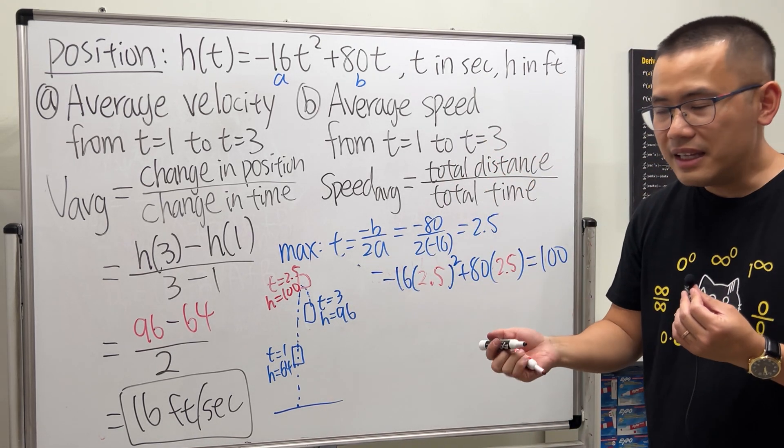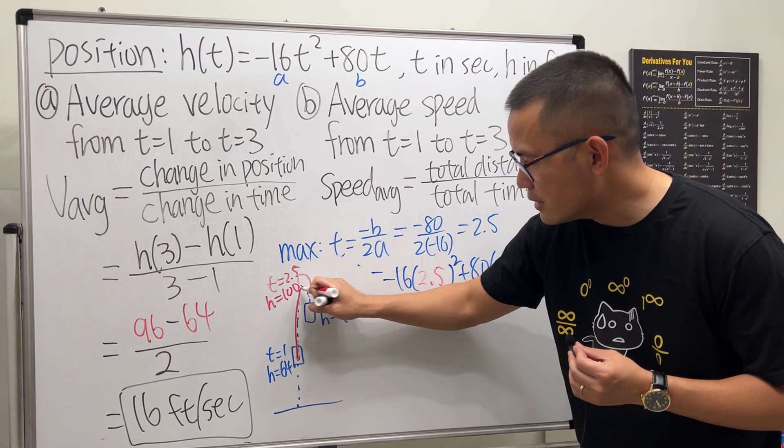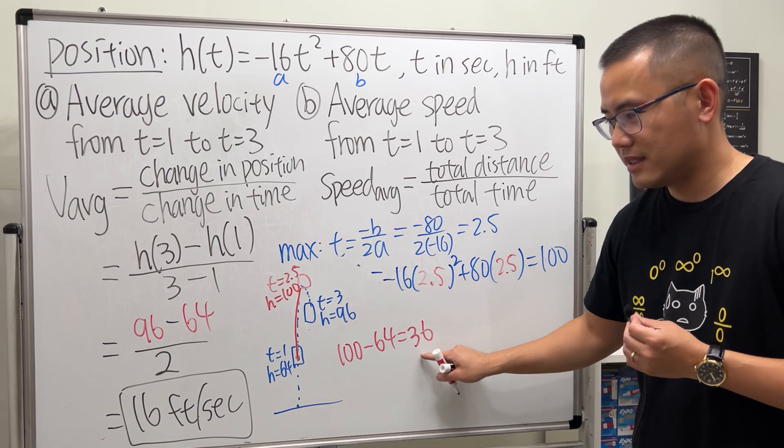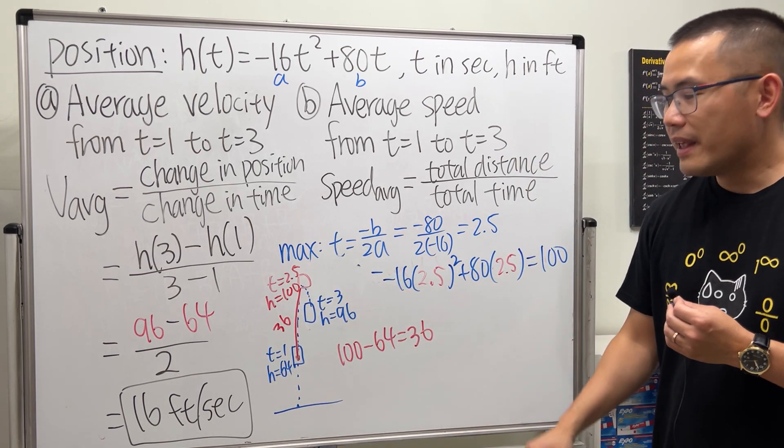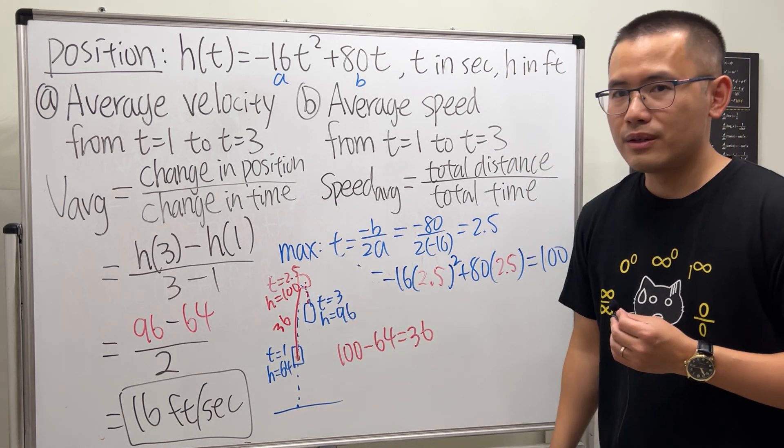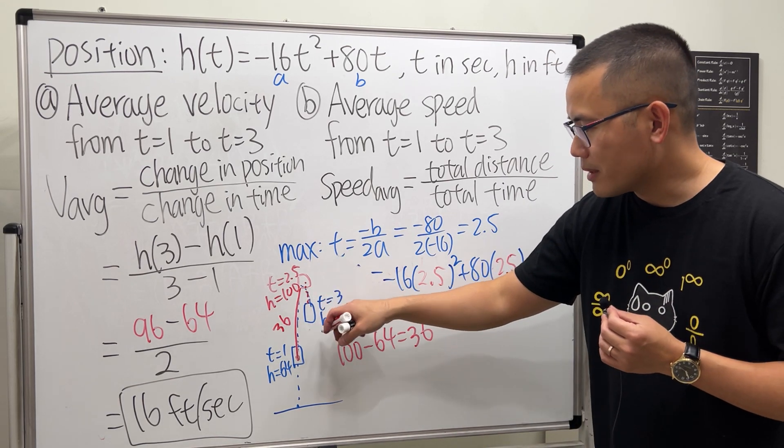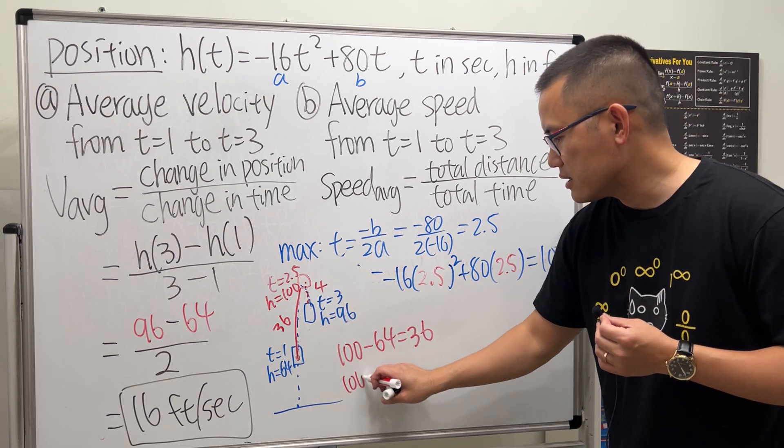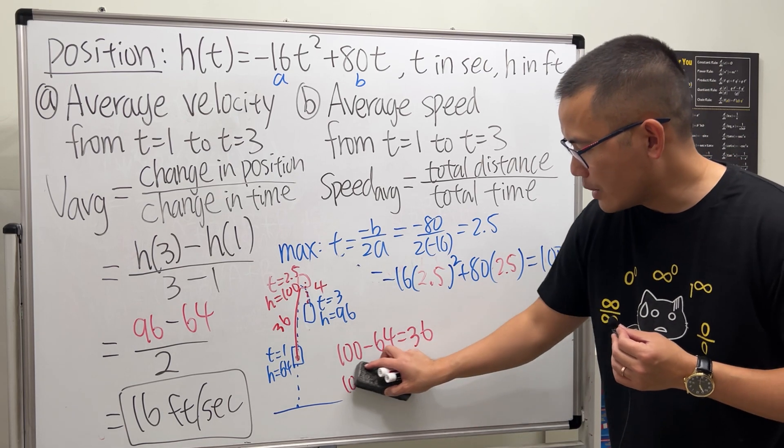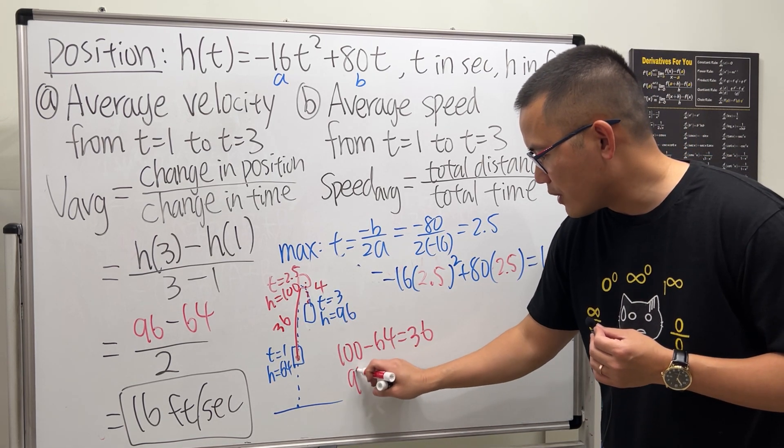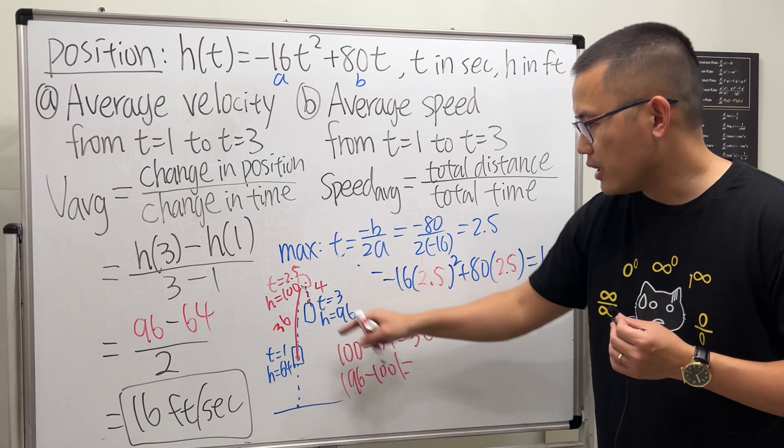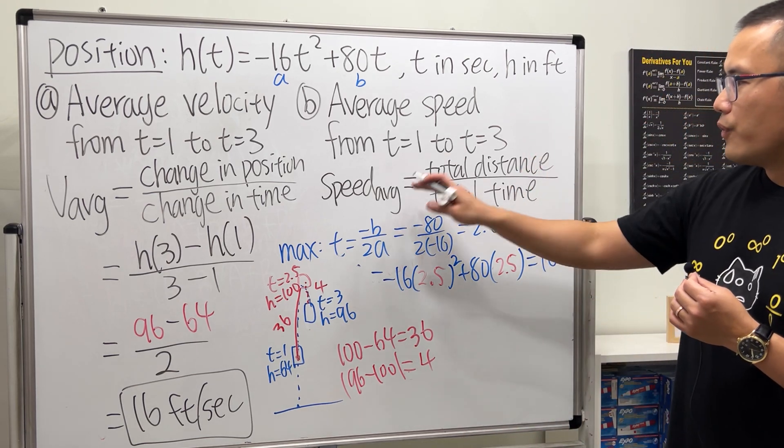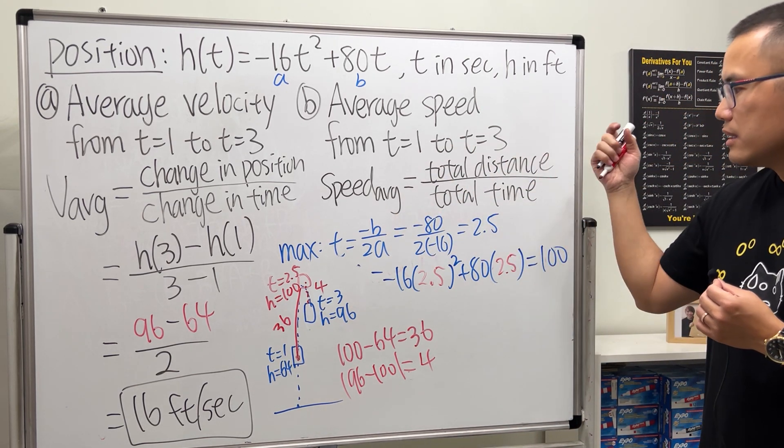And we will just have to compute the distance from here to here first. Okay, 100 minus 64 we get 36, so we have gone up 36 feet right here. And then from here, well, it went back down, but that's also the distance traveled. We went down by 4 feet. You can do 96 minus 100, 100 minus 96, doesn't matter, you just take the absolute value of it. So perhaps I will do the final minus the initial and then take the absolute value, because the total distance from here to here is positive. So you look at it as 4.